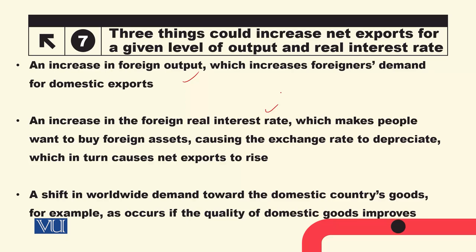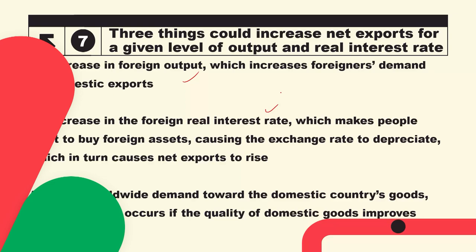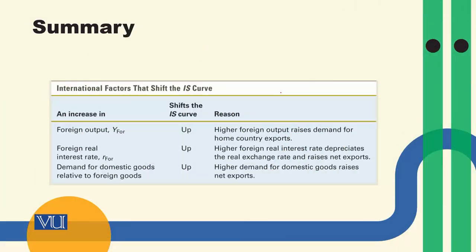First, a shift in worldwide demand towards domestic country goods. If demand for our exports increases in the world, it will add to net exports. For example, if our quality is better, we can increase exports and net exports rise. These are the international factors that can move net exports.